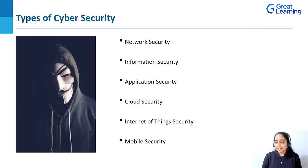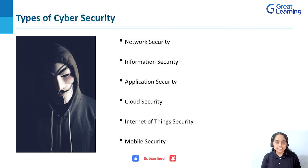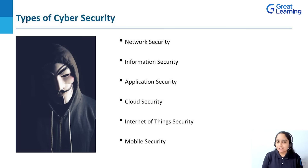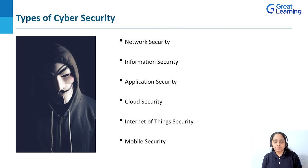Network security is the process of taking precautionary measures to protect data from unauthorized access, modification, or destruction. Information security, also known as InfoSec, is the process of protecting information from any kind of violations in the form of theft, abuse, or loss. Application security is the process of increasing the security of web and mobile applications to protect data from attackers. Cloud security is the set of policies and procedures that aims at protecting cloud-based applications and systems. Internet of Things security, also known as IoT security, is the process of protecting IoT devices from vulnerabilities. Mobile security is the process of protecting smartphones, tablets, and other various devices from vulnerabilities.